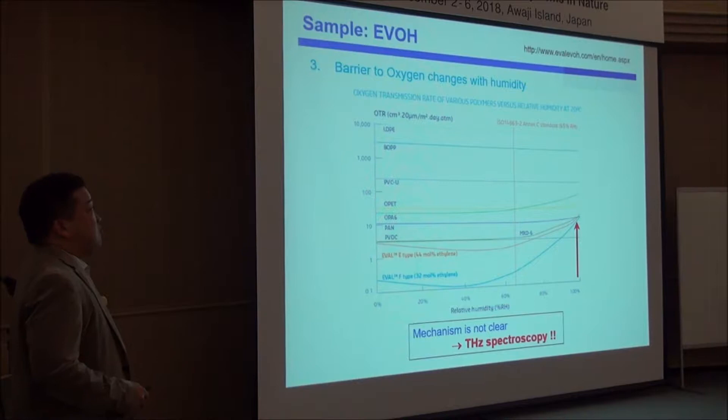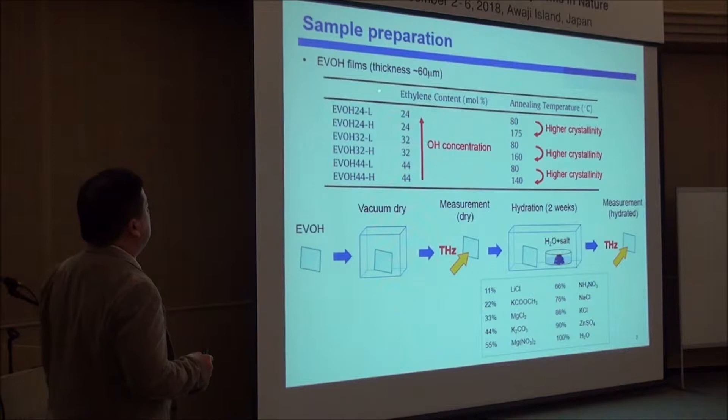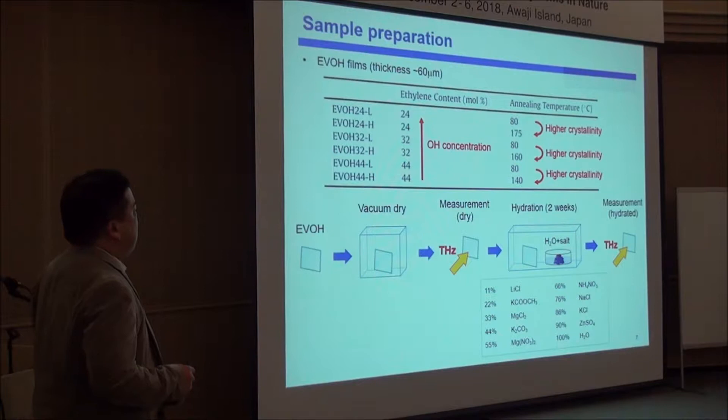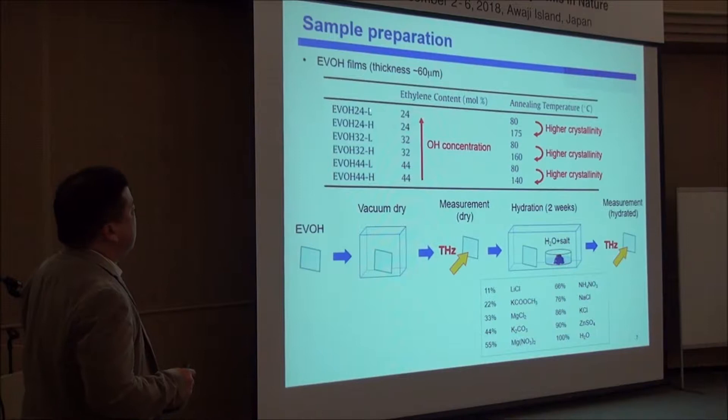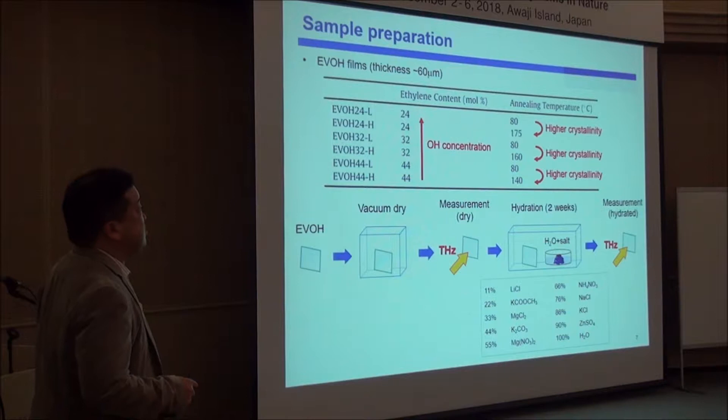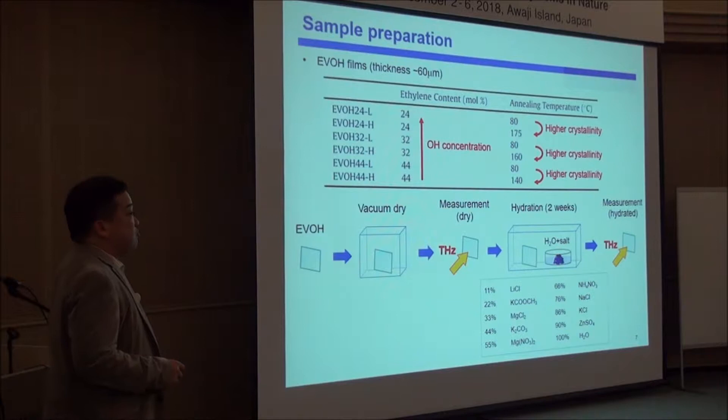They gave us products with thickness about this size, and gave me six kinds of samples. The numbers 24, 32, and 44 represent the ethylene content — as the number decreases, the OH concentration increases. The letters L and H represent annealing temperature; H means higher crystallinity. We prepared samples by first vacuum drying at 40°C and measuring the dry sample.